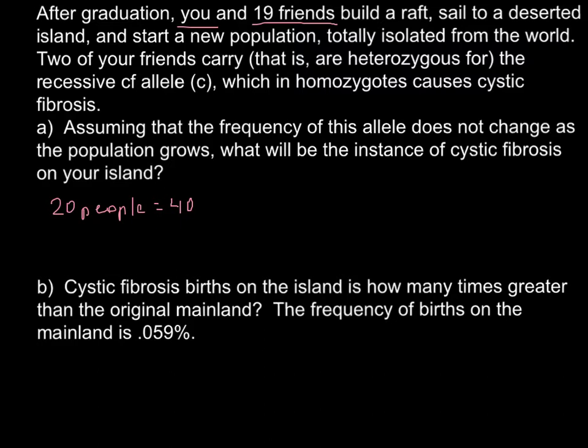Normally we have capital C, capital C, so we don't have this disease. Some people are carriers, so they are not affected with this disease and would be capital C, small c. And some people might be affected, those people who have two genes, that is small c, small c. And we know that two people are carriers, so this gene pool of this island would have two alleles that is small c.